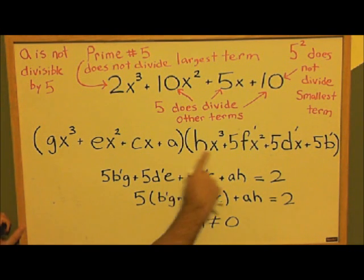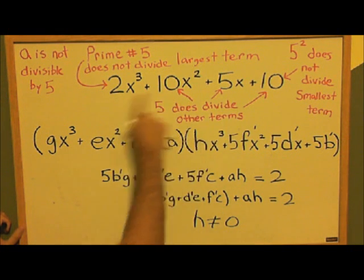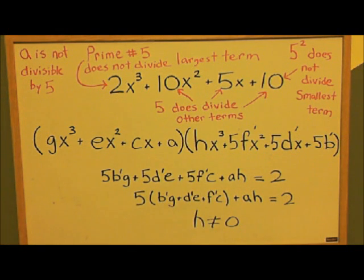If h is not equal to 0, then this polynomial is order x to the third. And so we were not able to factor our original polynomial into two smaller polynomials.